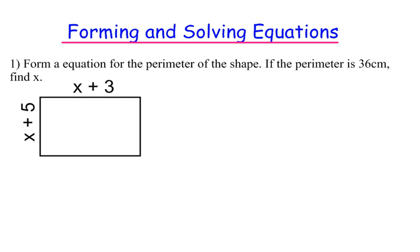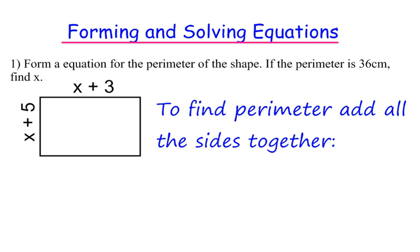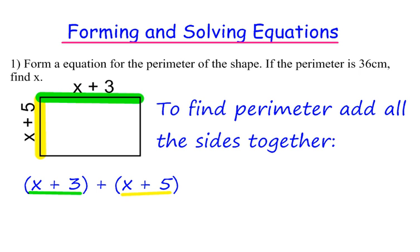Let's do three examples. Number one: form an equation for the perimeter of the shape. If the perimeter is 36cm, find x. So first, we have to find the perimeter by adding all the sides together. For this shape, the width is x plus 3 and the length is x plus 5.